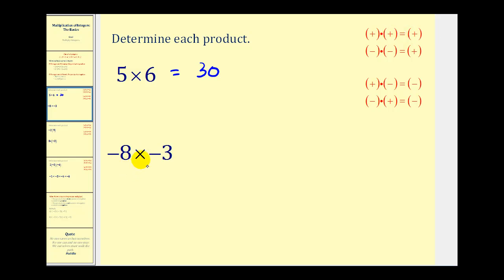Here we have negative eight times negative three. Well, a negative times a negative is positive, so here we have positive twenty-four.